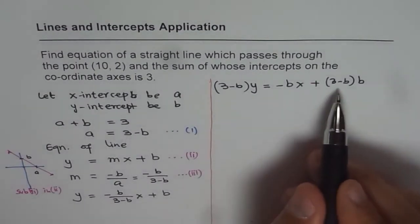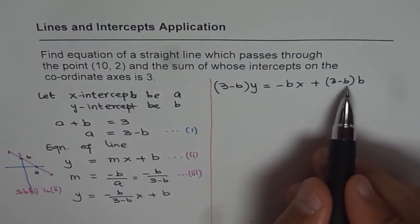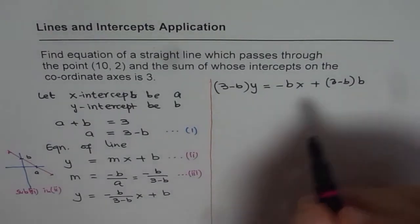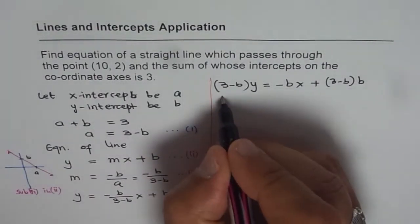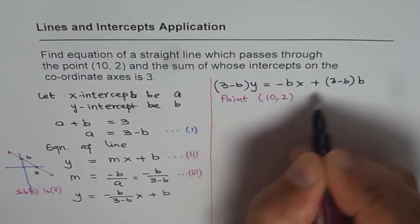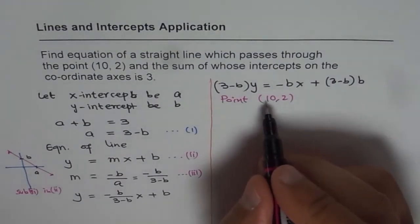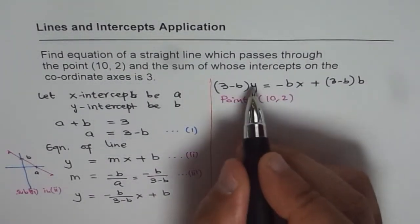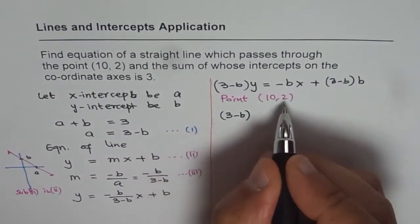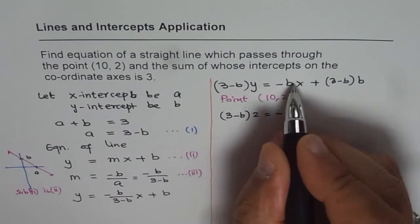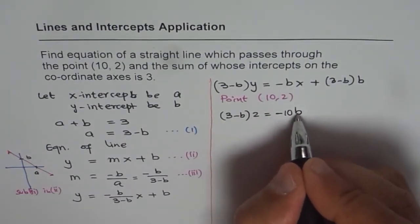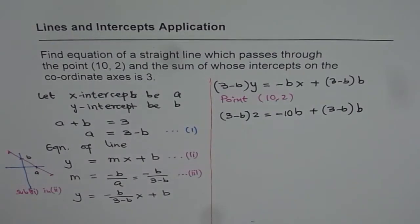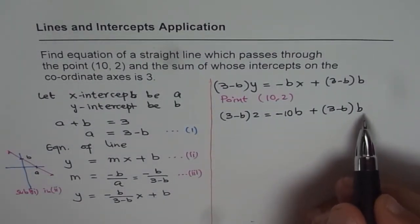Now, we have only one variable here. We can solve for that variable. We also know that the point (10, 2) lies on the line. To solve it further, we will use the given point. So we have a point, which is (10, 2), which lies on this particular line. So let us substitute 10 for x and 2 for y. If I write 10 for x and 2 for y, we get (3 - B) times 2 = -10B + (3 - B) times B. Now we have equation which has only B's in it. And we can always solve for B.